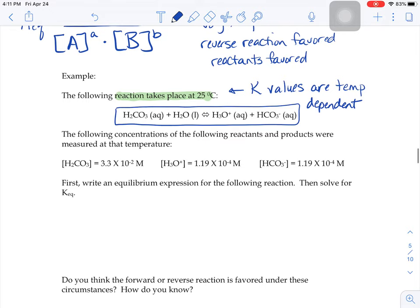So let's see. It tells us to write an equilibrium expression for that reaction and then solve for the K_eq. So our equilibrium expression, we're going to do products over reactants.